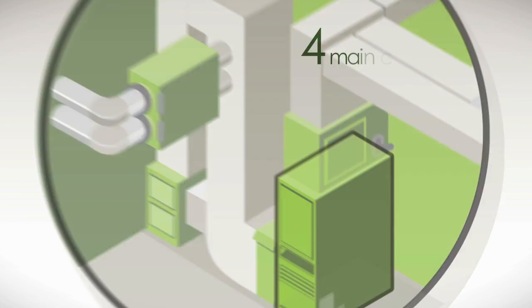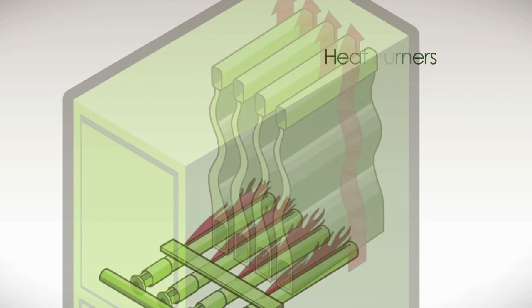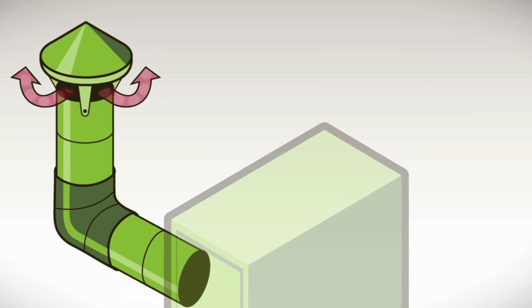Once you know a few basics, home comfort systems are really pretty simple. There are four main components to your furnace: burners that deliver and burn fuel, heat exchangers, a blower, and a flue that vents harmful gases.